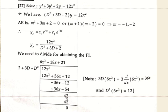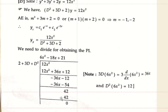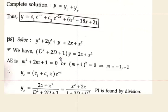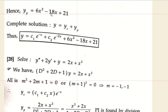Next, take 42/2 = 21. Write 21 in the quotient and multiply all terms by 21: 2·21 = 42; 3D·21 = 0; D²·21 = 0. Subtract: 42 − 42 = 0. The remainder is zero. The quotient is 6x² − 18x + 21, which is the particular integral yp.